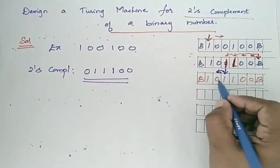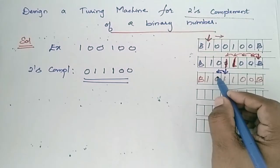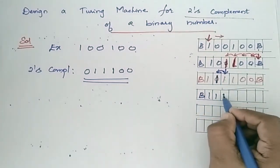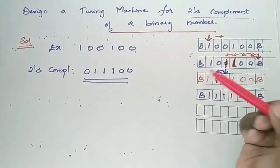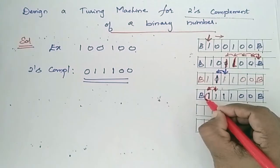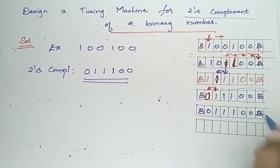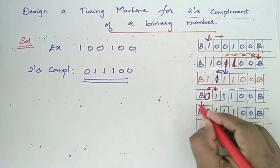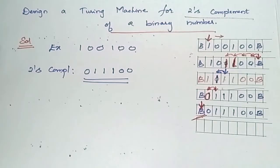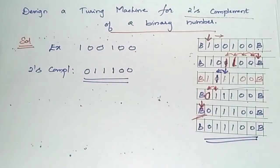Since it has crossed the first 1, all the remaining bits have to be changed. So this 0 will be changed to 1. Then, this 1 is replaced as 0. The series is updated accordingly. The tape header moves and stops until it encounters a blank space, at which point it stops.